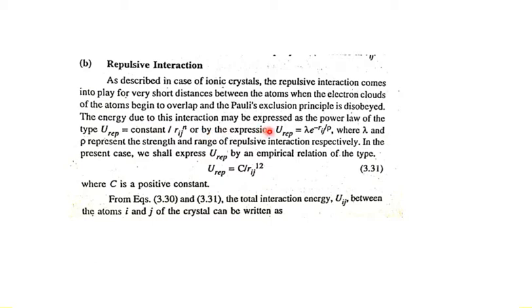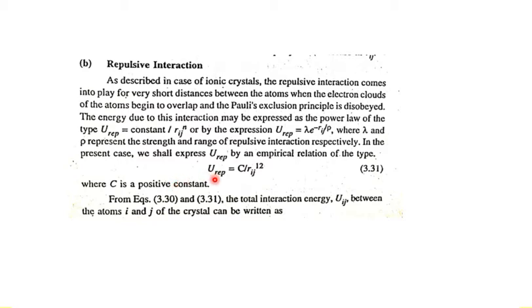The energy due to this repulsive interaction may be expressed as a power law of the type: U_repulsive = constant / r_ij^n. An alternative expression seen in the previous lecture is U_repulsive = λ·e^(−r_ij/ρ), where λ and ρ represent the strength and range of the repulsive interaction respectively. In the present case, we shall express U_repulsive by an empirical relation of the type c / r_ij¹², where c is a positive constant.